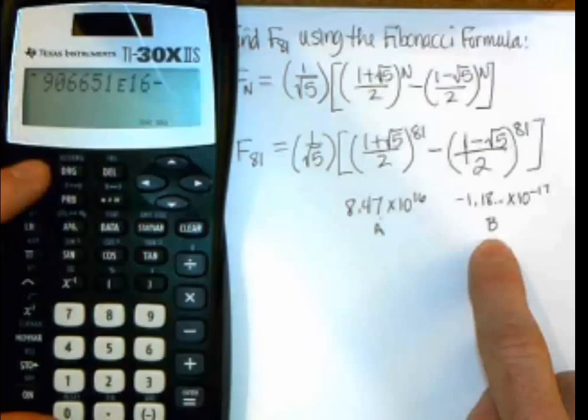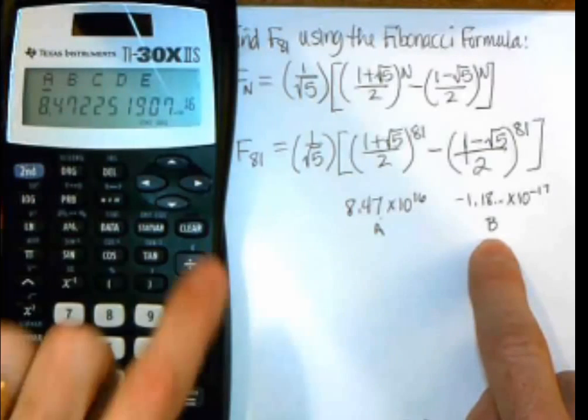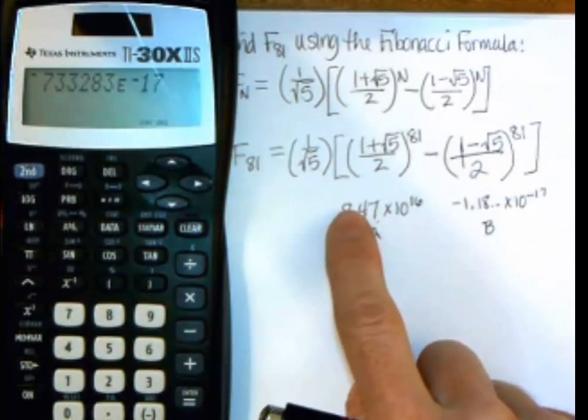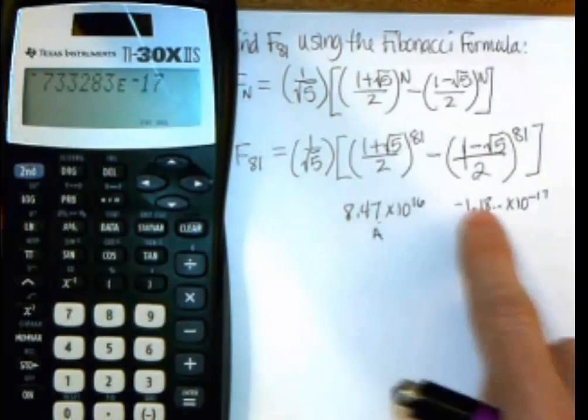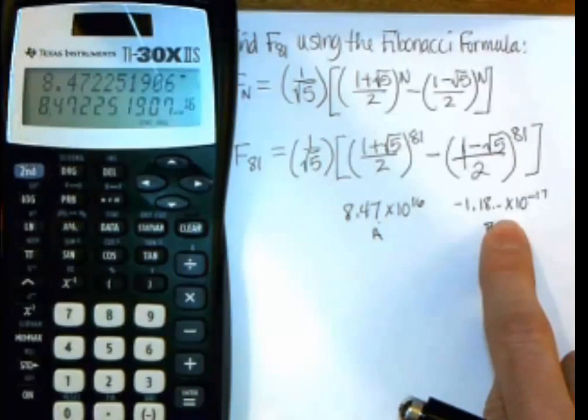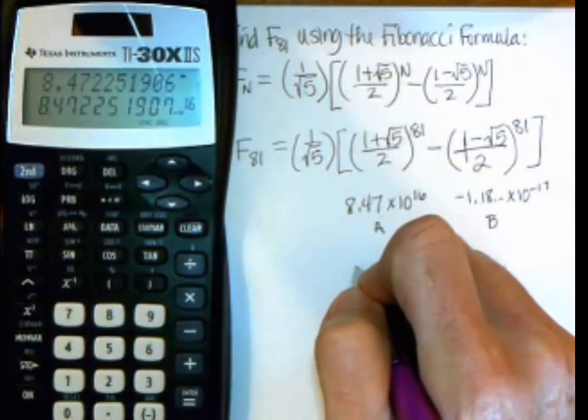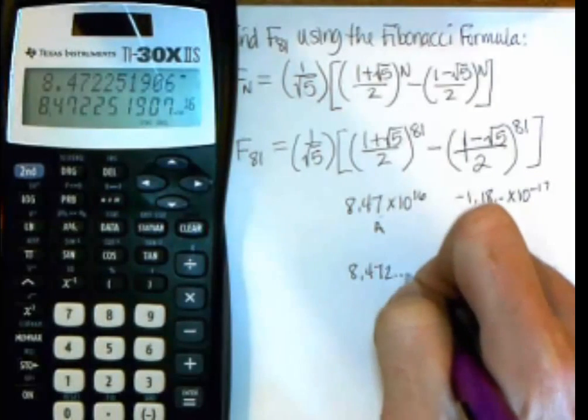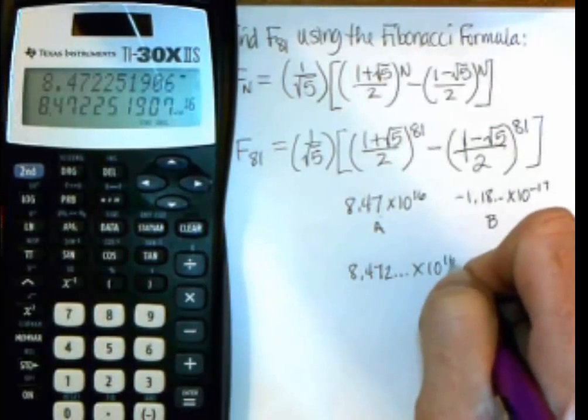And then I want to subtract the value that I stored in B. So I do the second, store, to get the recall. It's on A. I need to move it over to B. So there's B. Push enter. And then now it has written on its screen, this big number minus this big number. So I have to push enter. And there's my result.